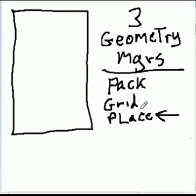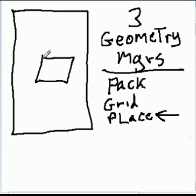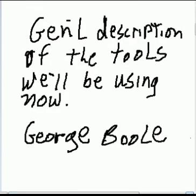And finally, you have the place geometry manager. The place geometry manager allows you to place a widget at a specific location by specifying the X and Y coordinate. This has been a general description of the tools we'll be using. This is George Bull — thanks so much for listening. If you liked the video, please rate it by clicking the like button below, and I'll see you in the next video.